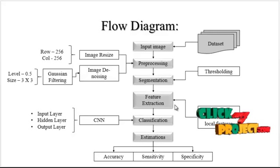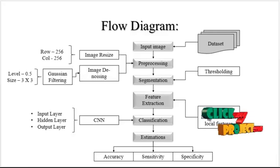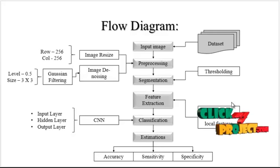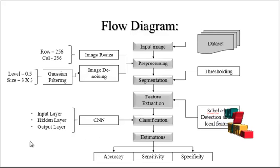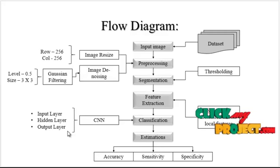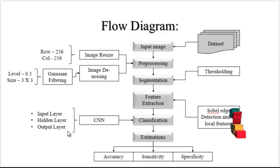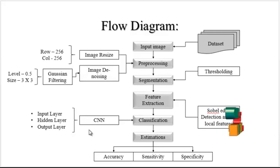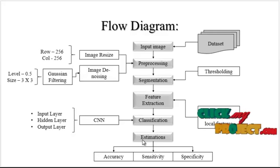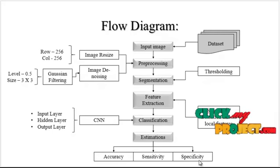In feature extraction, before extracting features we detect the edge portions of the bone using Sobel edge features from the images. After extracting the Sobel edge features, they are considered as local features, then fed into the CNN. The CNN is implemented in the classification stage, and the layers used in the CNN extract features once again. It then classifies whether the bone is fractured or normal. Finally, in performance estimation, we have three performance parameters: accuracy, sensitivity, and specificity.